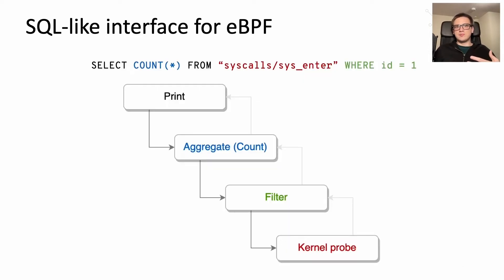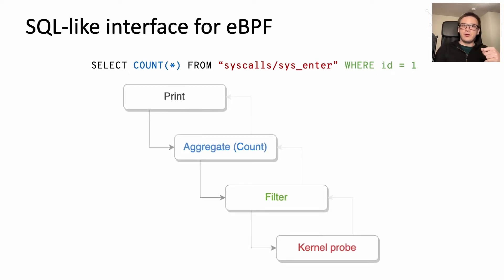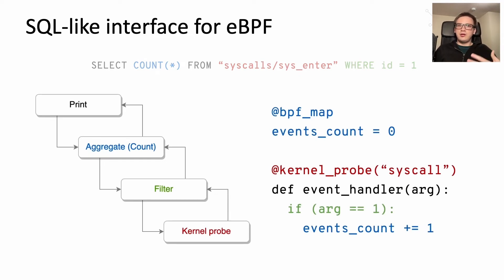How this works is that the query is broken down into multiple simple operators, starting with the print operator which requests data from the aggregate operator, which in turn requests the filtered data. In the end, it goes down to the kernel probe which sources data from the kernel and sends it back upwards. Once we have that, we can compile each operator into efficient BPF code which takes care of both user space and kernel space for us — we don't even need to care about the verifier.